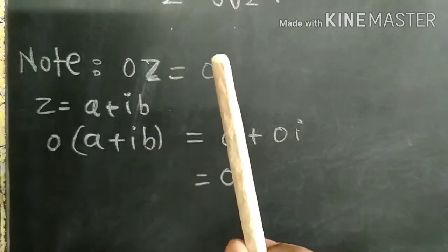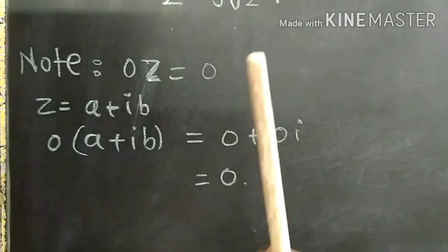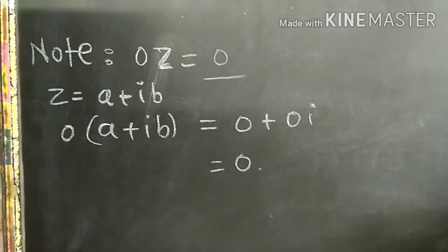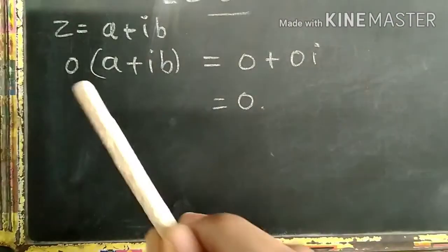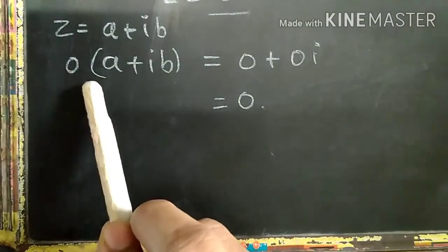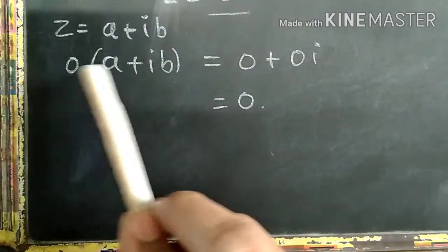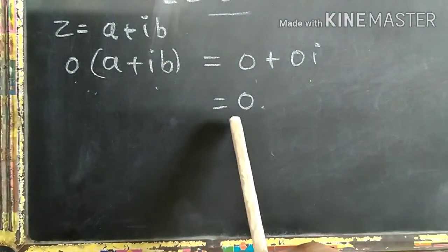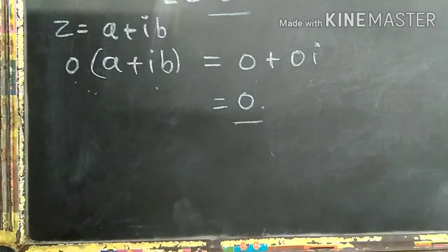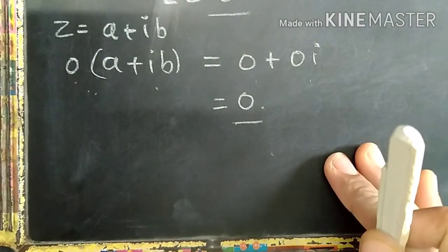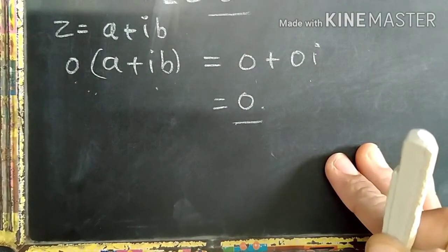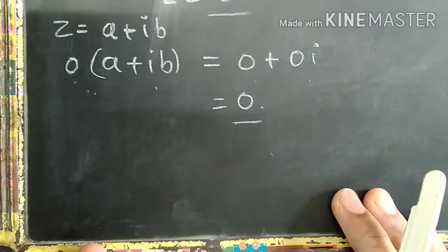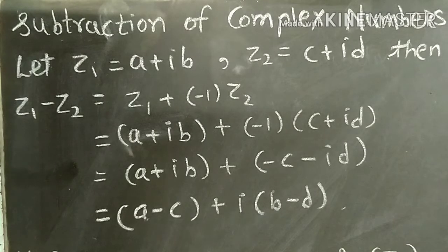Note: if we multiply any complex number by zero, where Z equals A plus IB, then A times 0 is 0 and B times 0 is 0. Therefore we get the zero complex number. If we multiply any complex number by 0, we get the zero complex number. Now, addition and subtraction of complex numbers are similar.